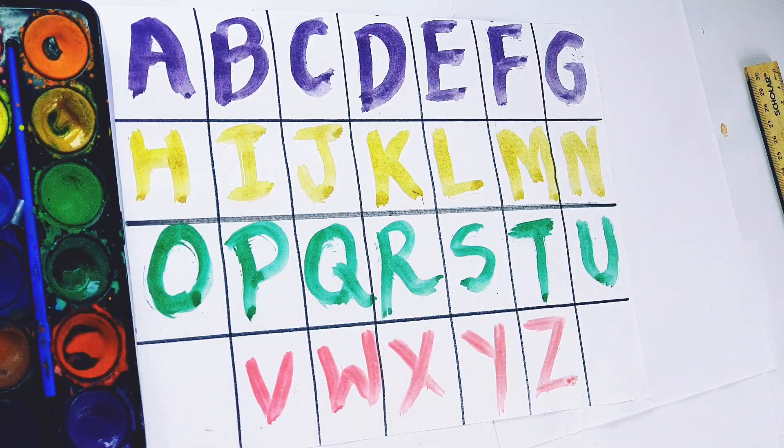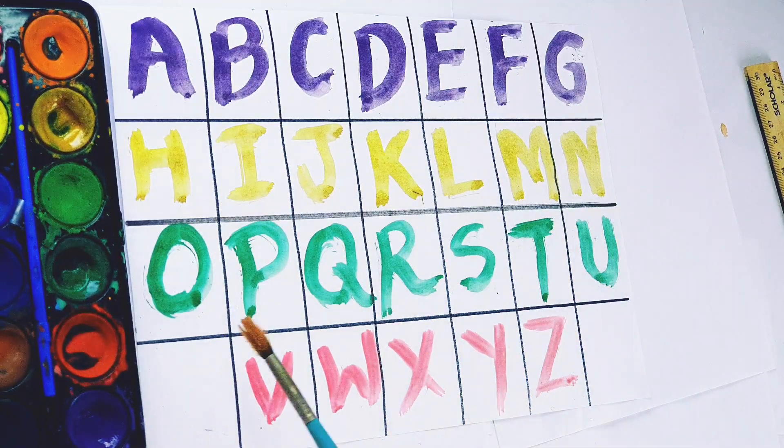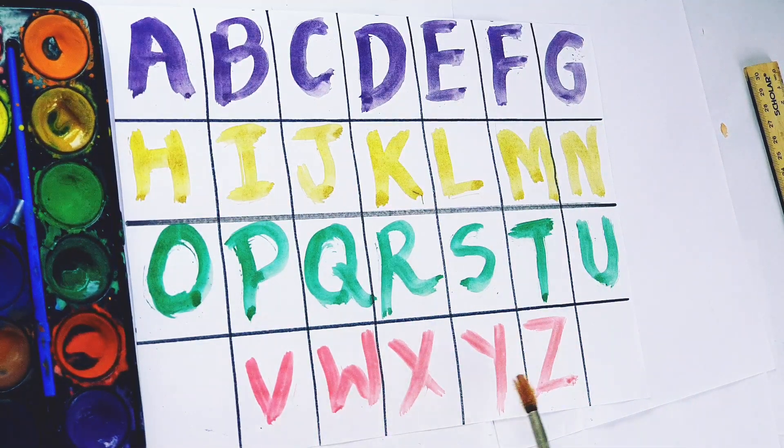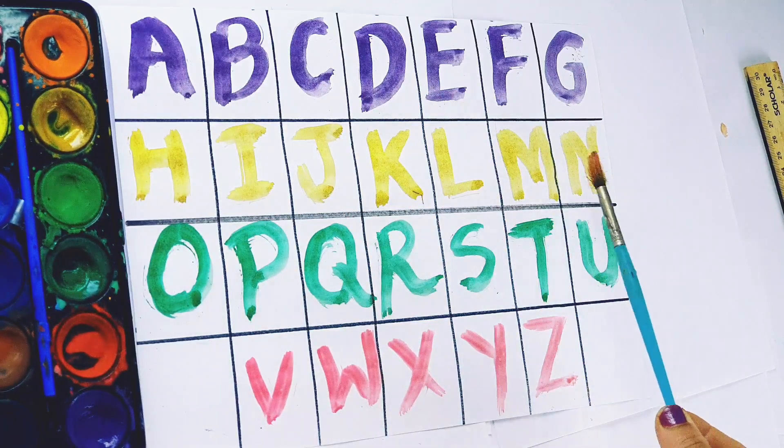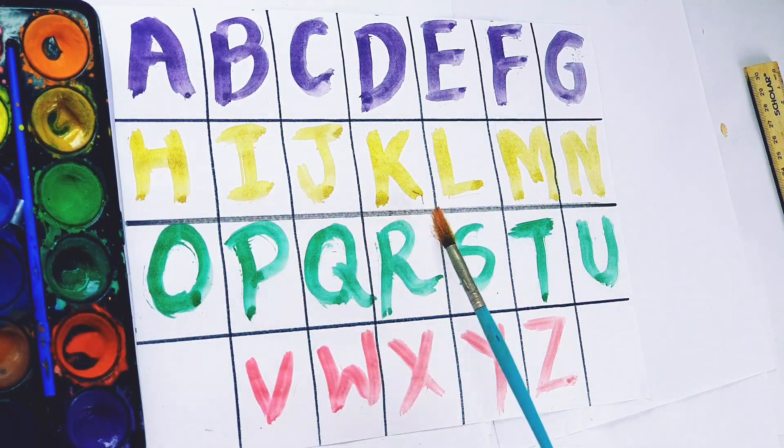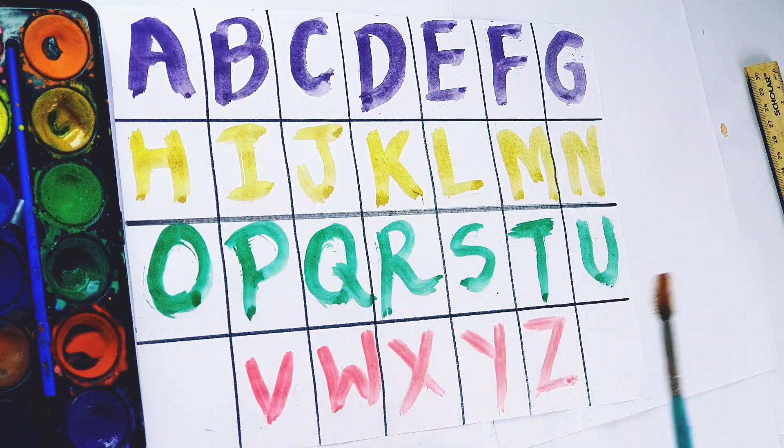So kids, what we learned today: we learned purple color, yellow color, green color, and pink color. A, B, C, D, E, F, G, H, I, J, K, L, M, N, O, P, Q, R, S, T, U, V, W, X, Y, Z.